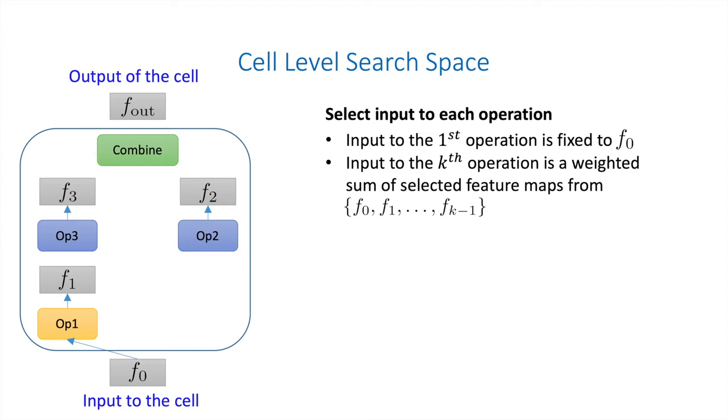The input to the first operation is fixed to F0, which is the input to the entire cell. Then, starting from the second operation, we select from existing feature maps and compute a weighted sum as the input to the operation. In the example on the left, we select F0 and F1 as the input to operation 2, and select F1 as the input to operation 3. After we obtain the input of all the operations, we concatenate them along the channel dimension and use a convolution layer to reduce the channels to be the same as F0.